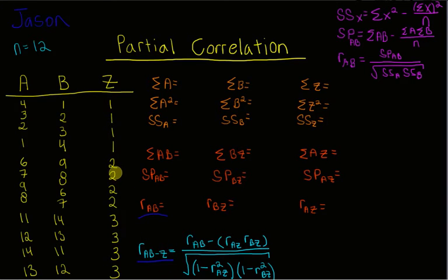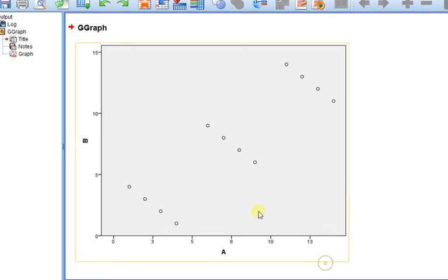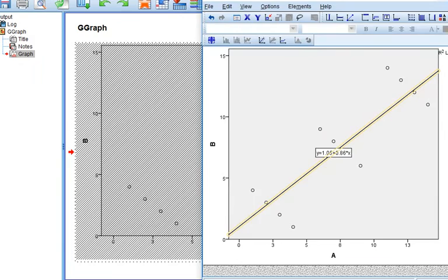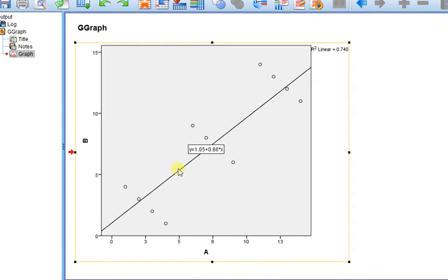Now the first thing you want to do before you actually do any calculations is a scatter plot of your data. So I've done a scatter plot between variables A and B in SPSS. Here's a relationship or scatter plot between A and B. By looking at it you might think there is a positive linear relationship. And if I were to actually plot a line of best fit, you'll see that there is a positive linear relationship between variables A and B.